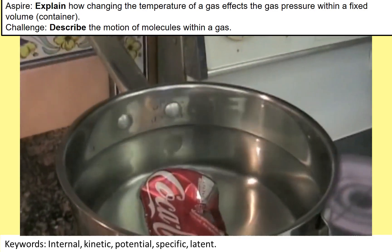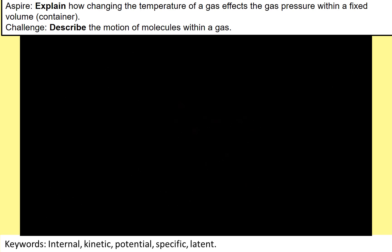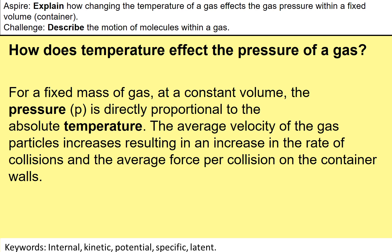How does temperature affect the pressure of a gas? If you have a fixed amount of gas in a container at constant volume — not changing the shape of the container — then pressure is directly proportional to temperature. If you increase the temperature, you increase the pressure in that container. The average velocity of the gas particles increases, which increases the number of collisions with the wall, which means the pressure is increased. The higher the temperature, the more those particles move around and hit the side of the container — that is what causes pressure.